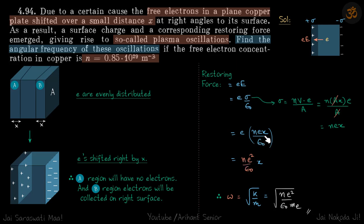This is proportional to x, so the electrons will perform simple harmonic motion. Force equals kx, so this is k. Omega will be the square root of k over m, which is the square root of Ne² over ε₀m, where m is the mass of an electron. That is the angular frequency of these oscillations.